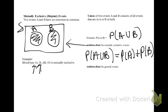If you have two events that are not mutually exclusive, then you're going to get a Venn diagram that looks something like this.